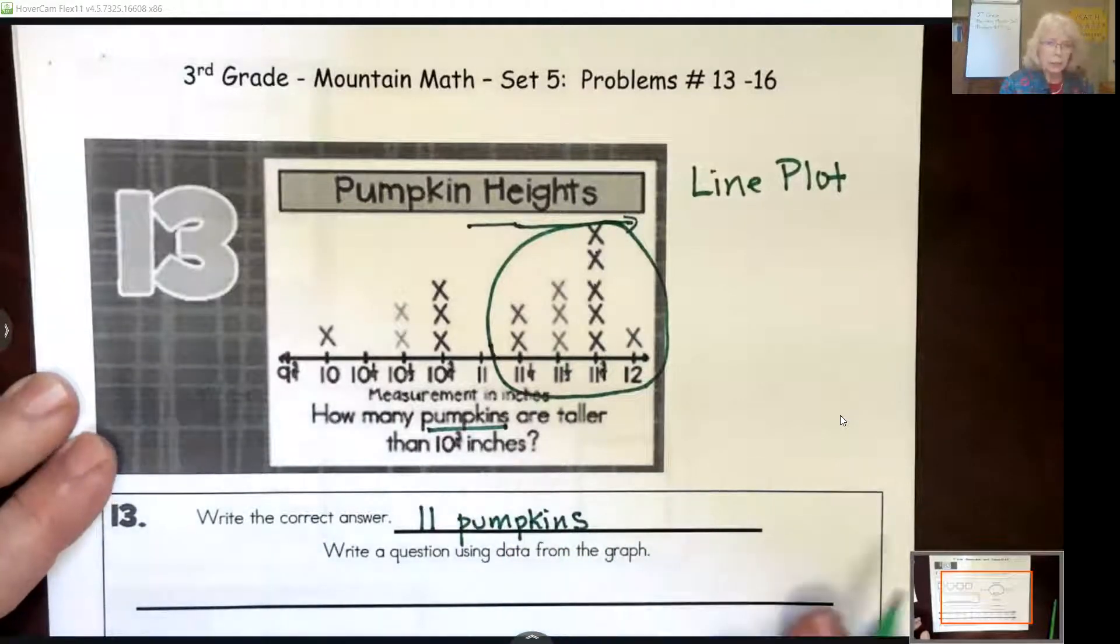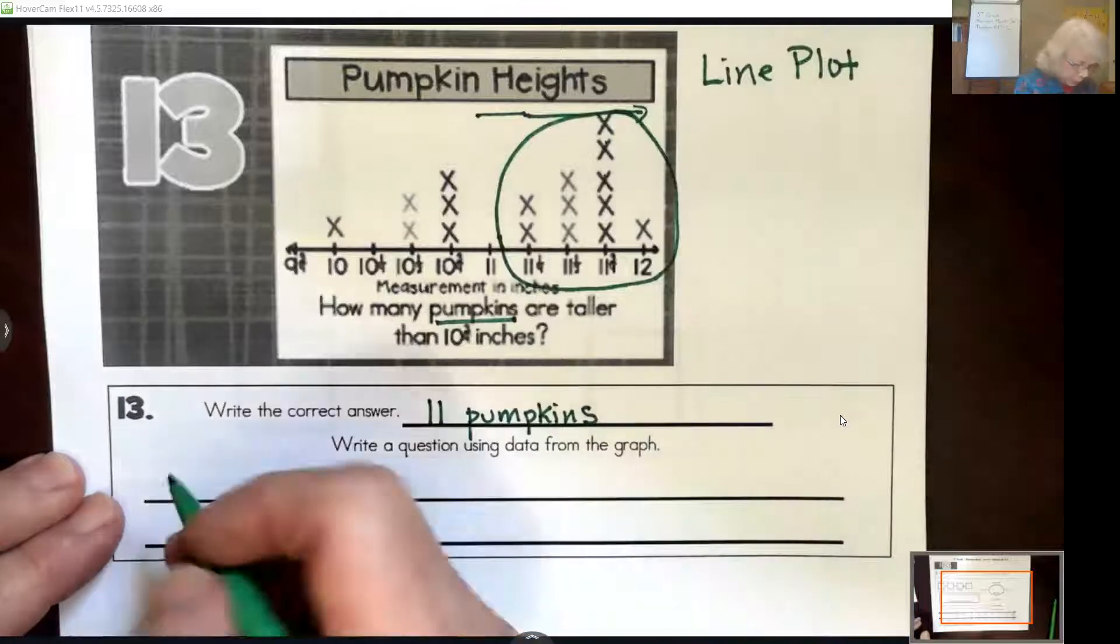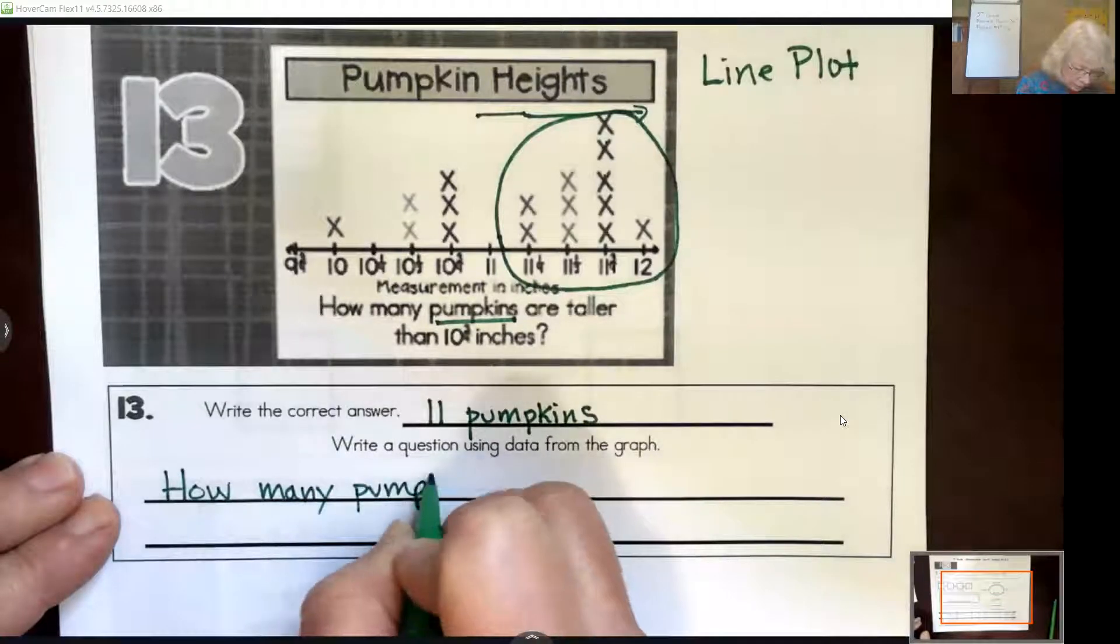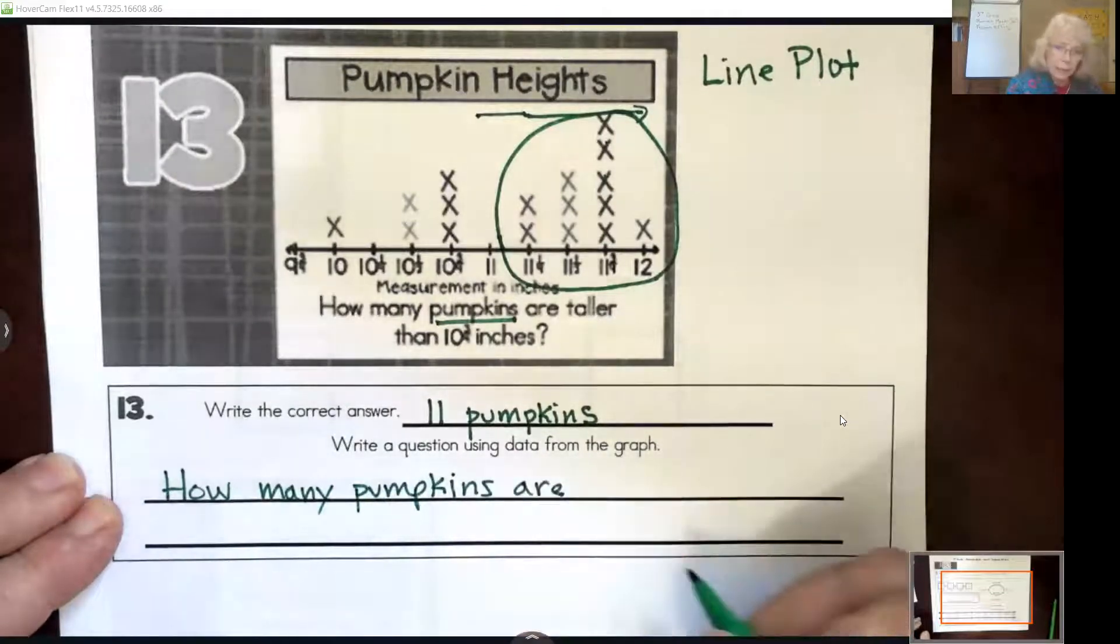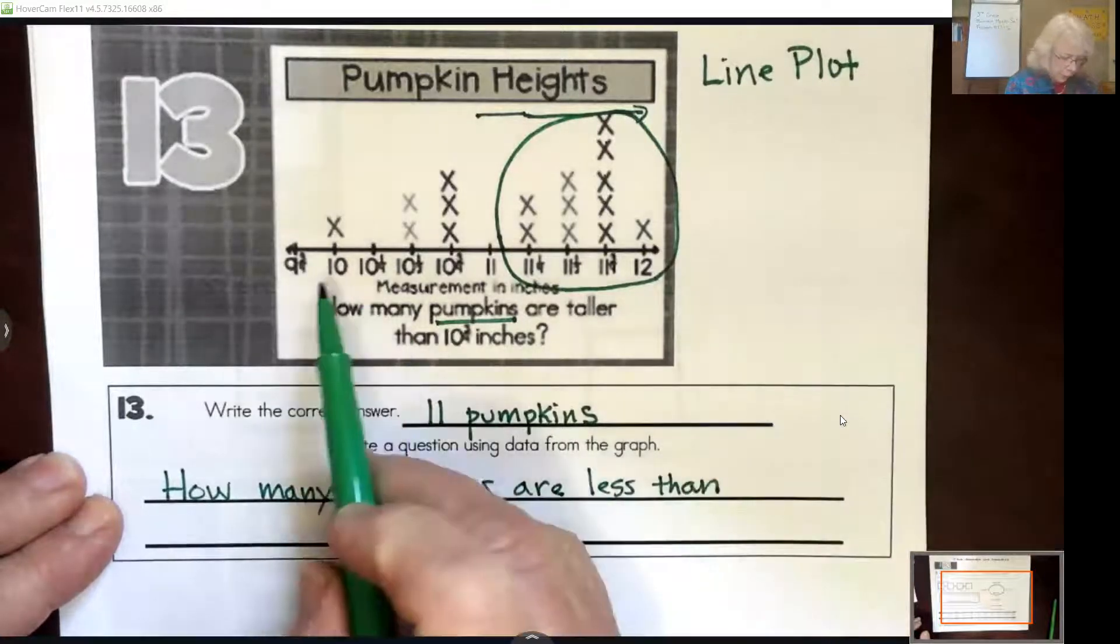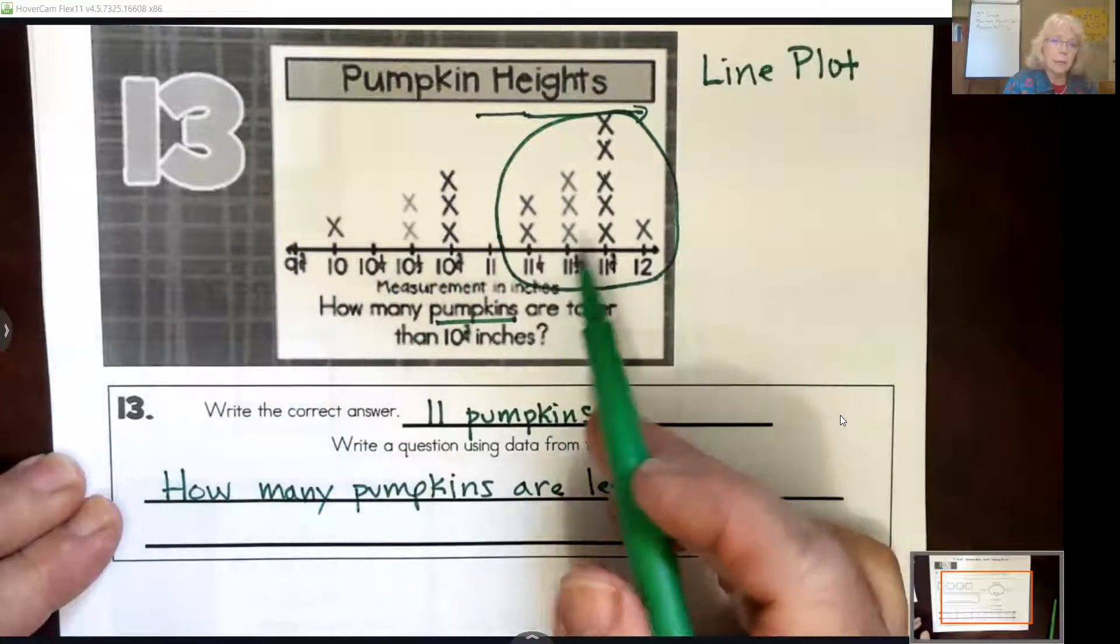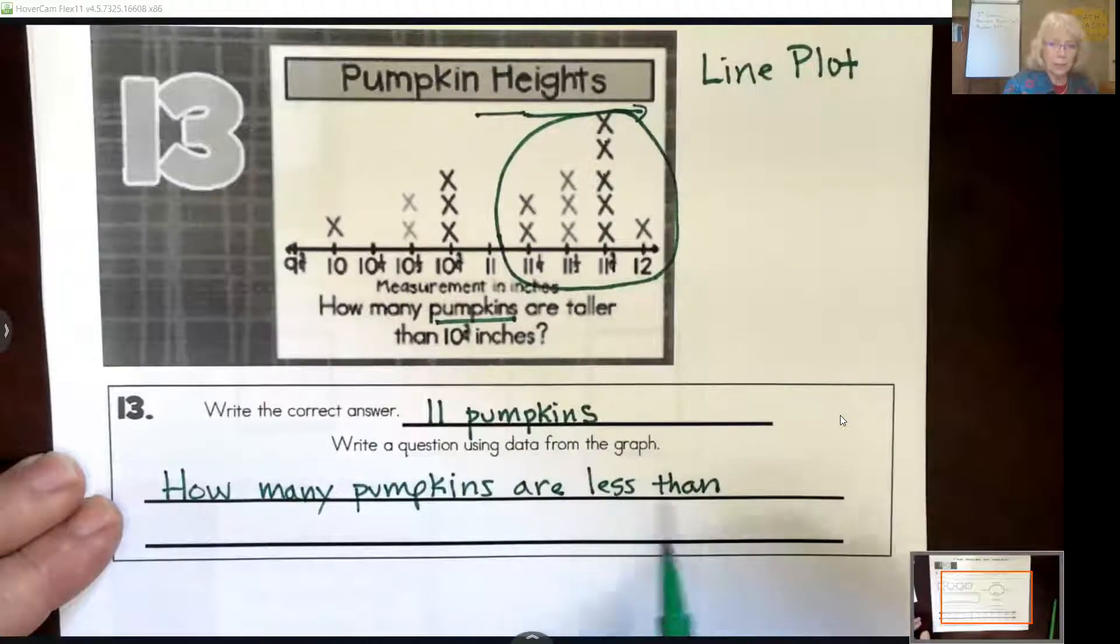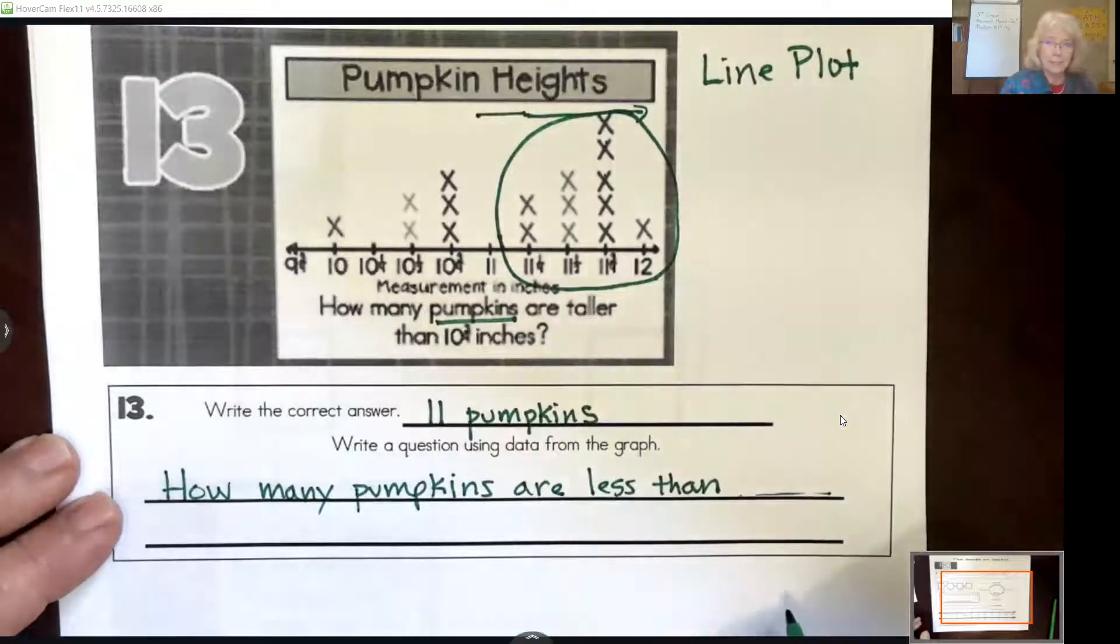In response to our question how many pumpkins are taller than ten and three quarters inches. Write a question using the data from the graph. Well, you can write your own question, but I'll get you started. So I would say how many pumpkins. Now you can say are more than or less than. So I'm going to do less than. And then I would pick one of these heights that they've already given. And then you would have to figure out how many X's stand for the pumpkins which are shorter than that. So you fill in the rest and answer your own question.